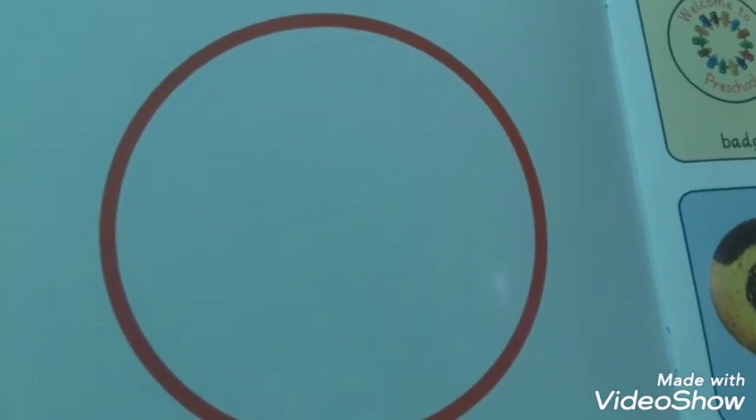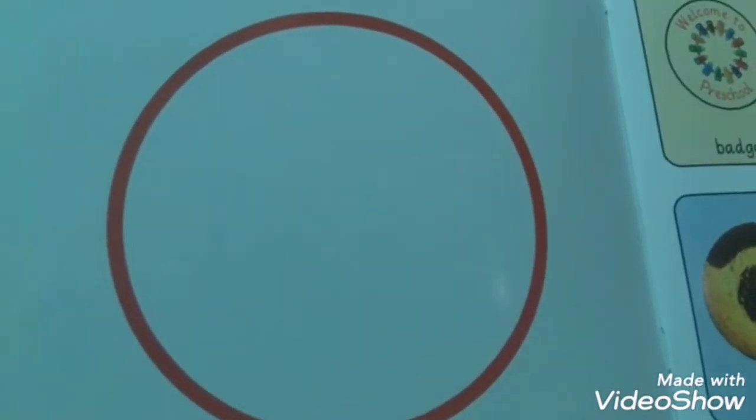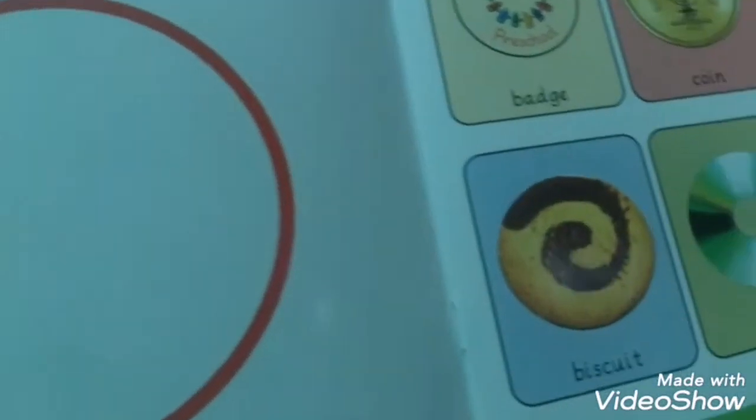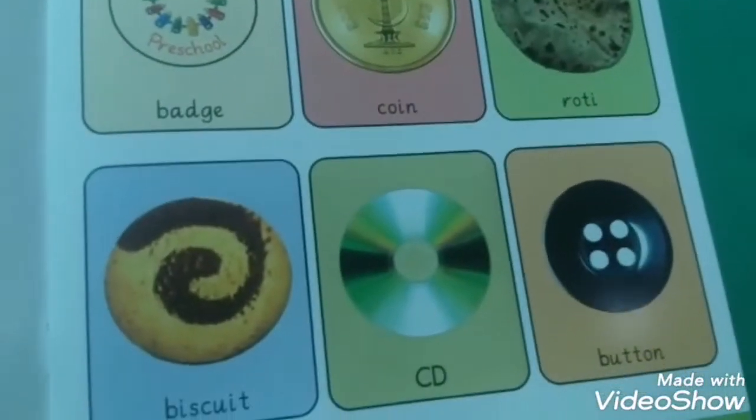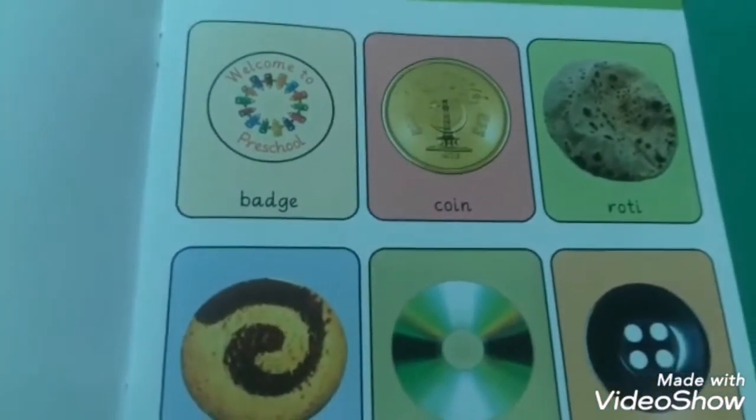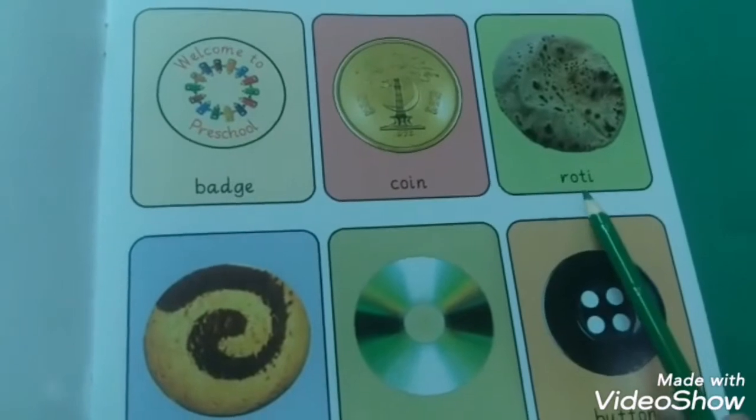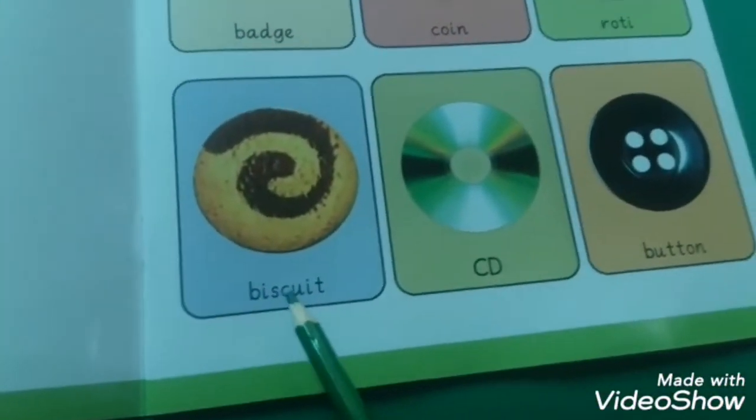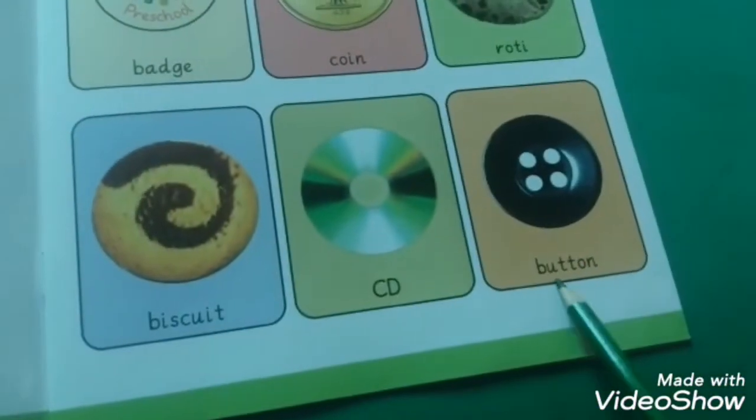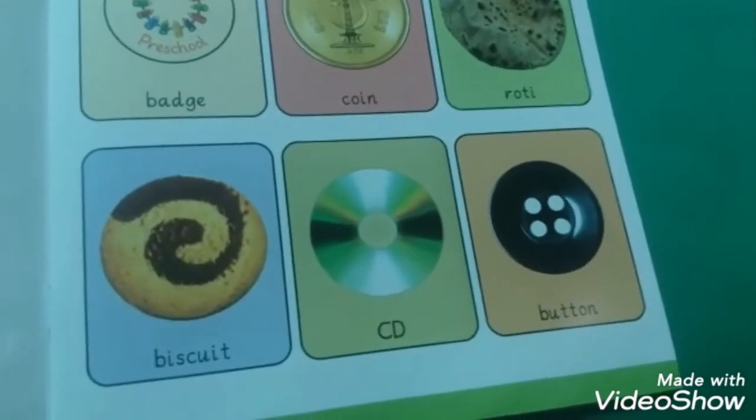Other side, here are different pictures and all pictures' shapes are circle. Bed, coin, roti, biscuit, CD, button. Everything in round shape, and we call the shape circle shape.